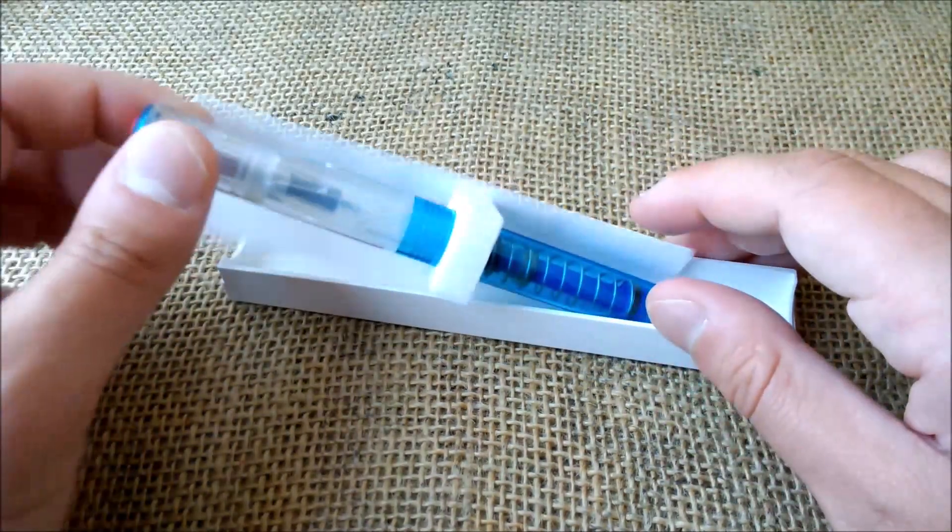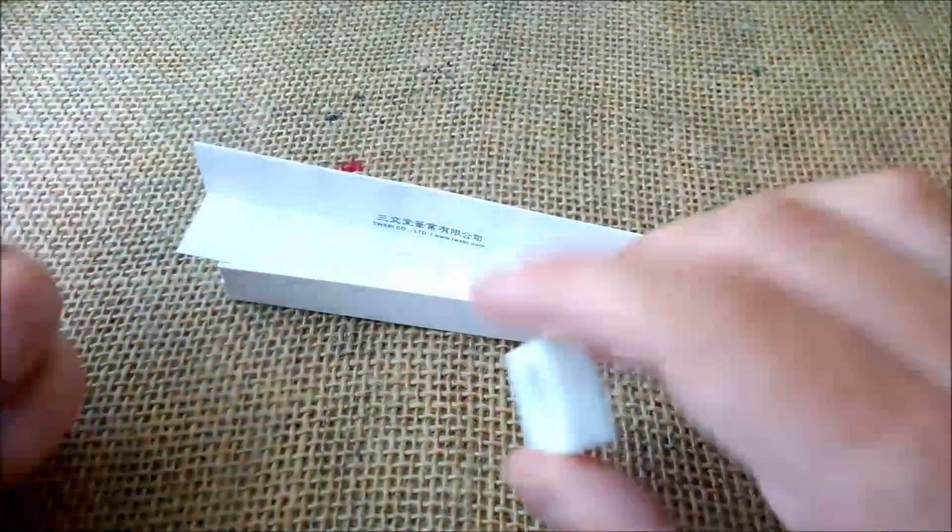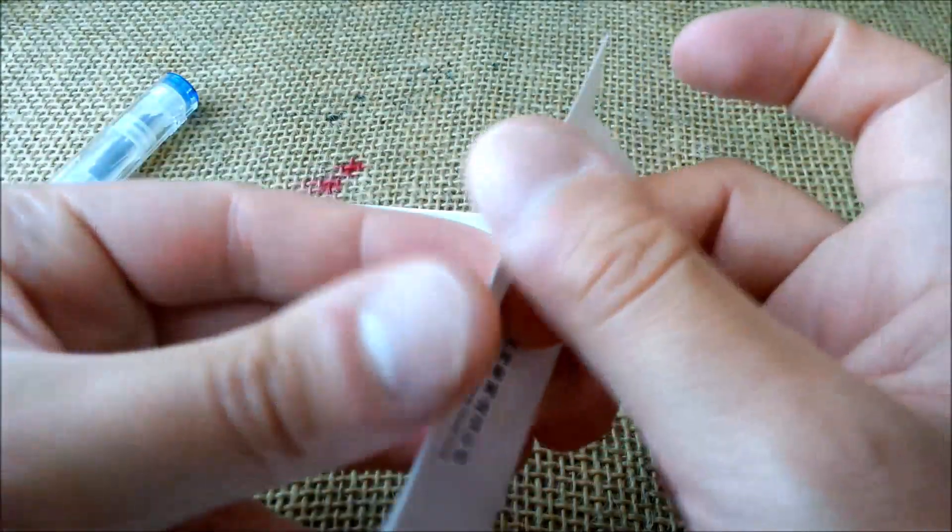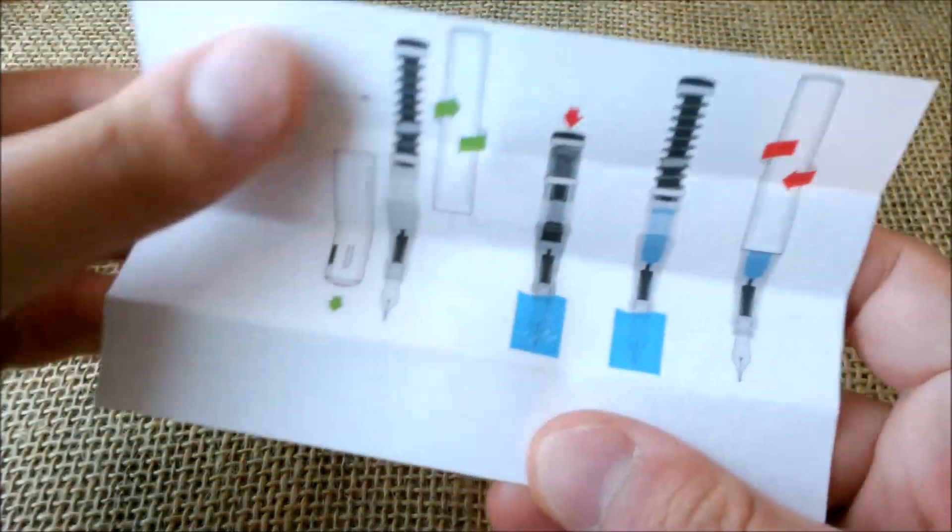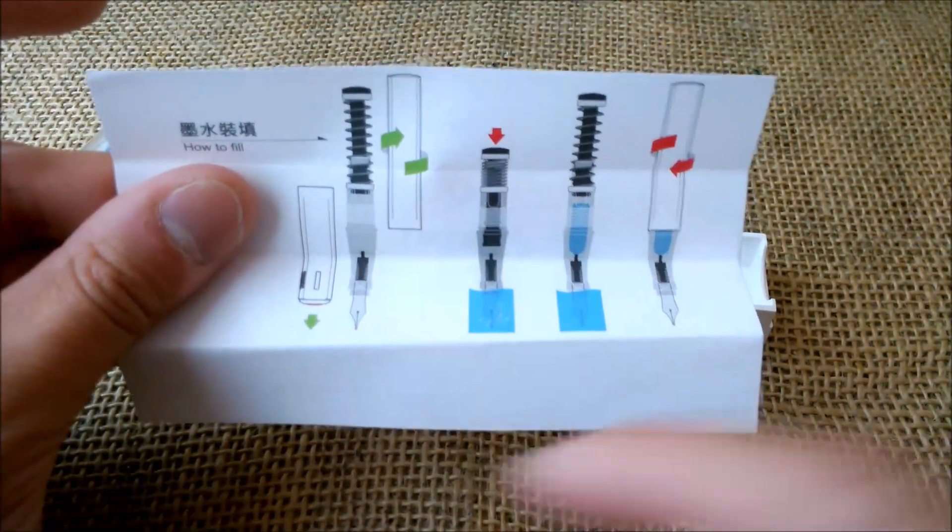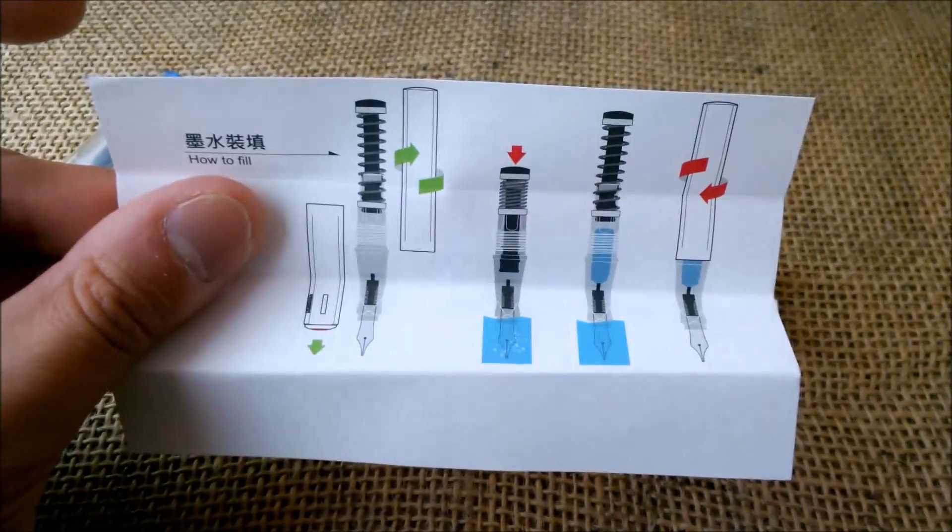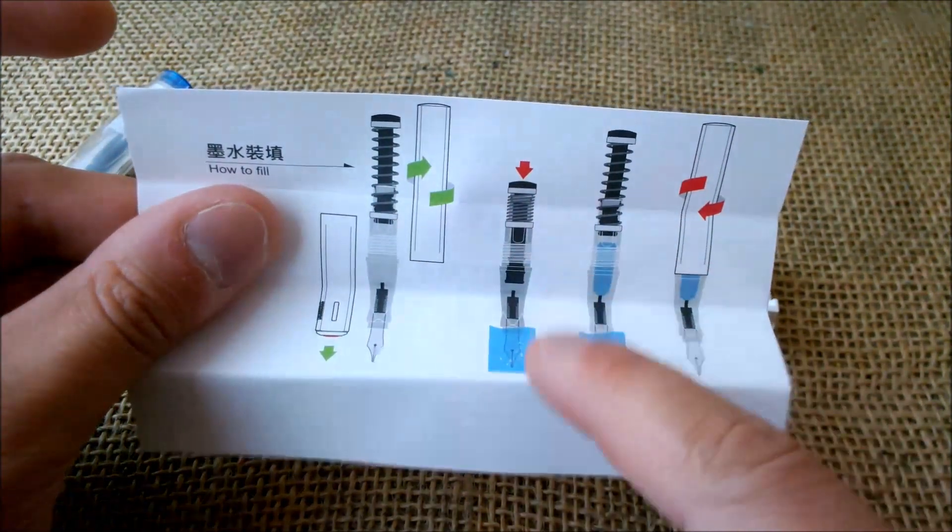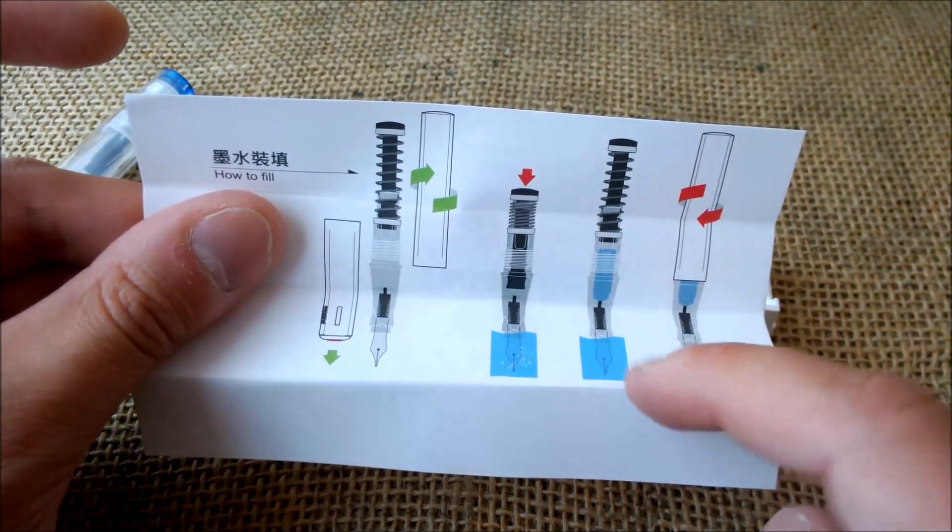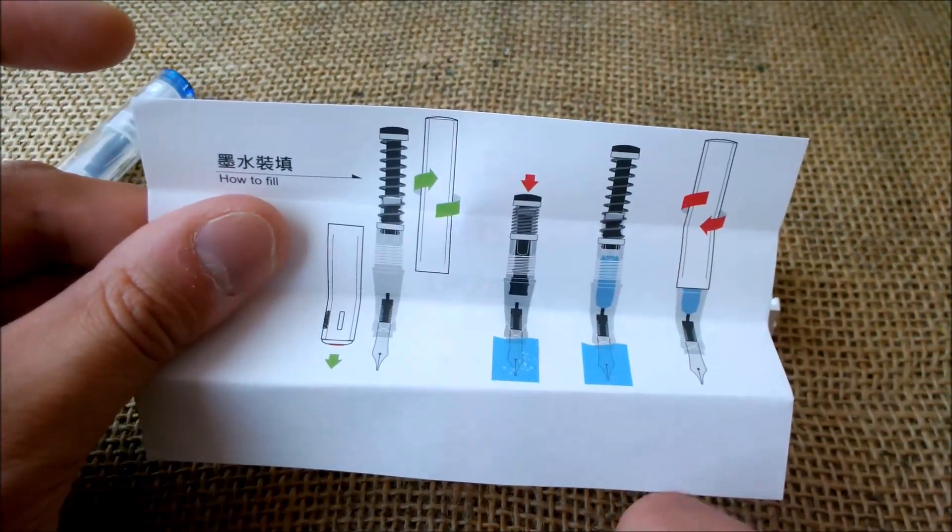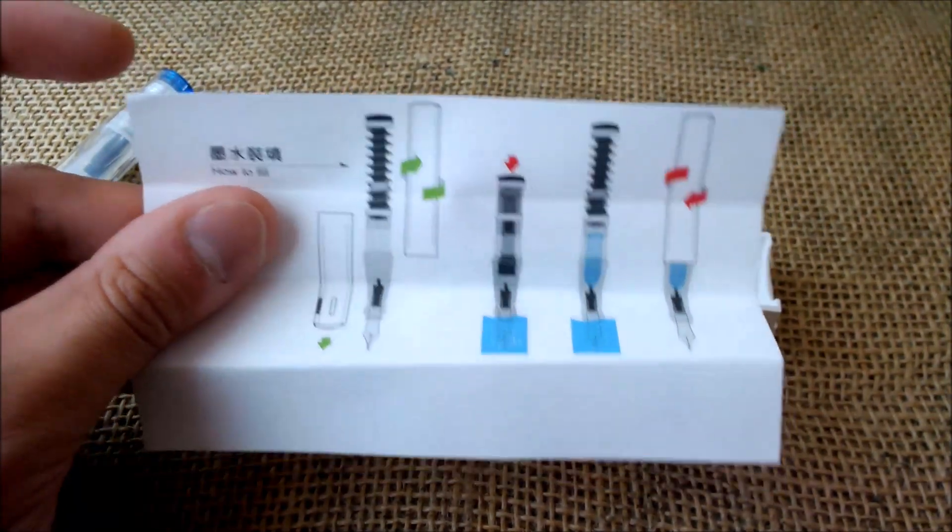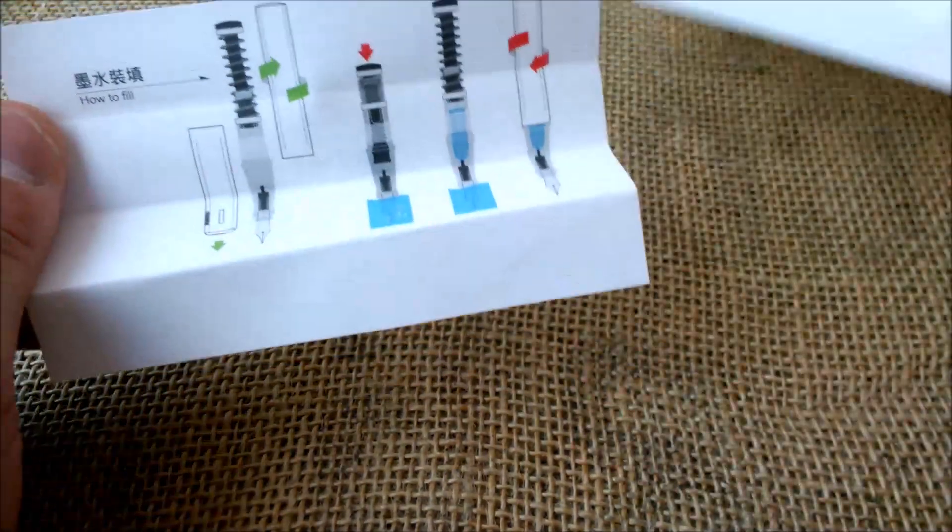We have the pen here, and inside the box we also have the instructions. The filling up instructions are quite simple: you just have to unscrew the barrel, then press that spring into the bottle of ink and it will create the vacuum, and then it will draw ink inside the pen. That's it, so let's try it.